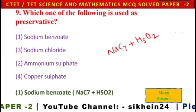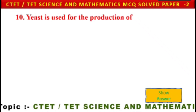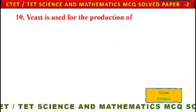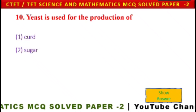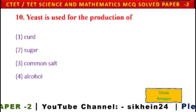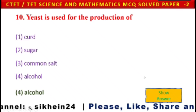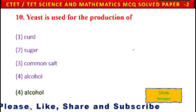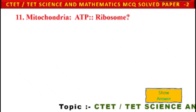Next question: This substance is used for the production of — 1) curd, 2) sugar, 3) common salt, 4) alcohol. Alcohol is the appropriate answer of this question.